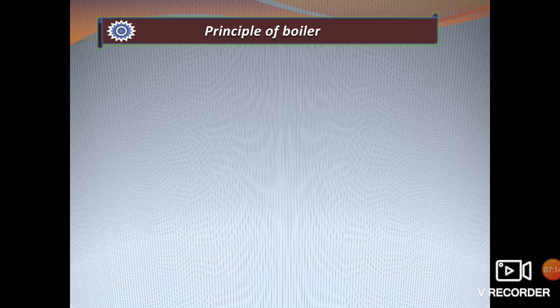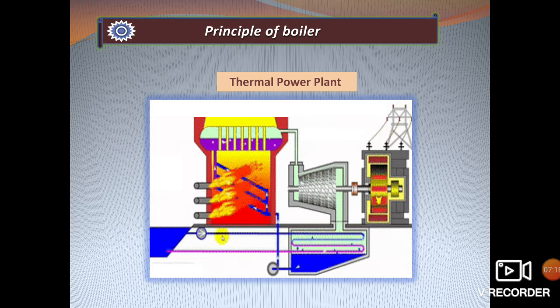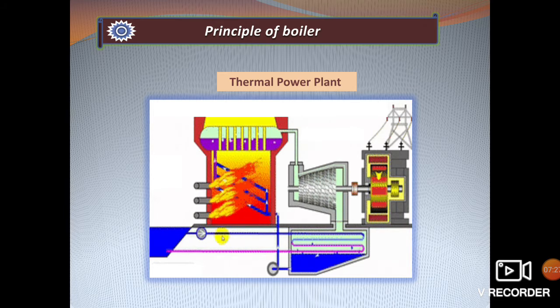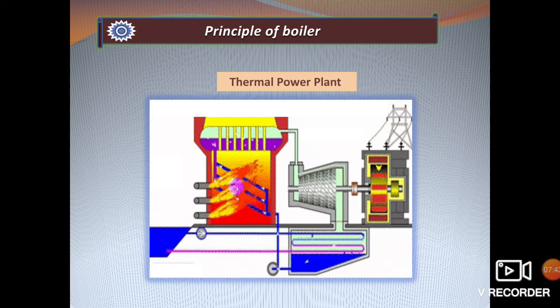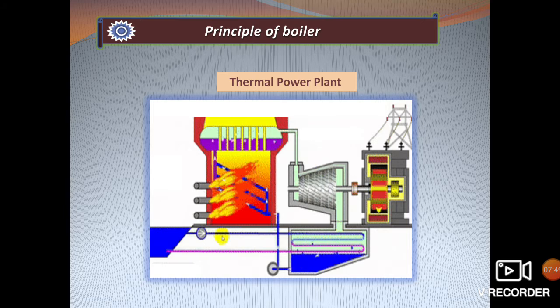The principle of a boiler can be understood using a thermal power plant as an example. A boiler converts water into steam, which in turn rotates the turbine blades connected to a shaft. This shaft is coupled with a generator shaft for power generation used in various industrial applications. The steam produced in the boiler passes through the blades of the turbine — the force of the steam turns the blades and accelerates the turbine. Steam contains an enormous amount of energy, making the turbine quite efficient.